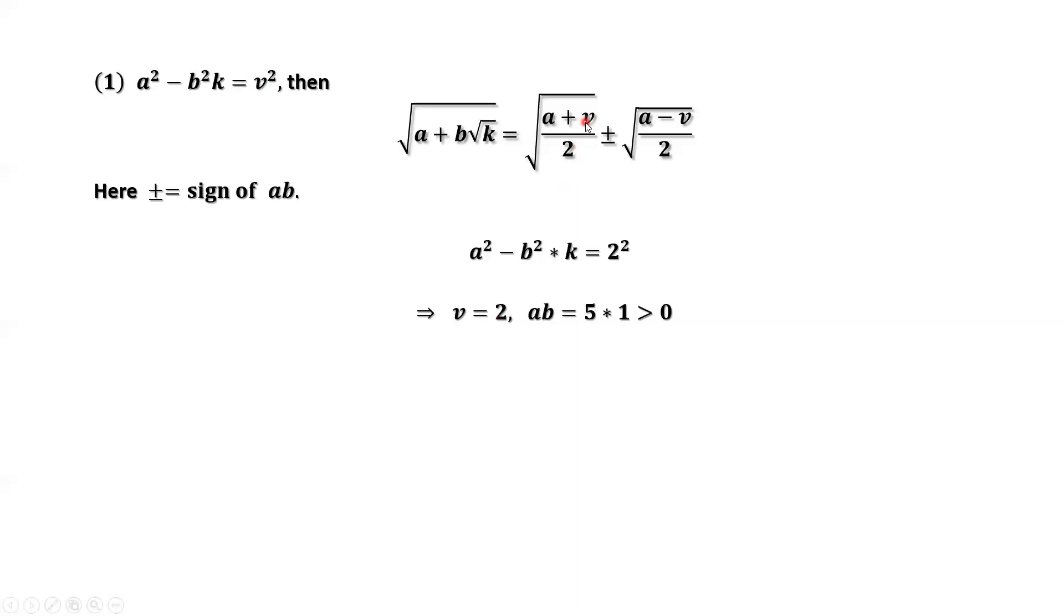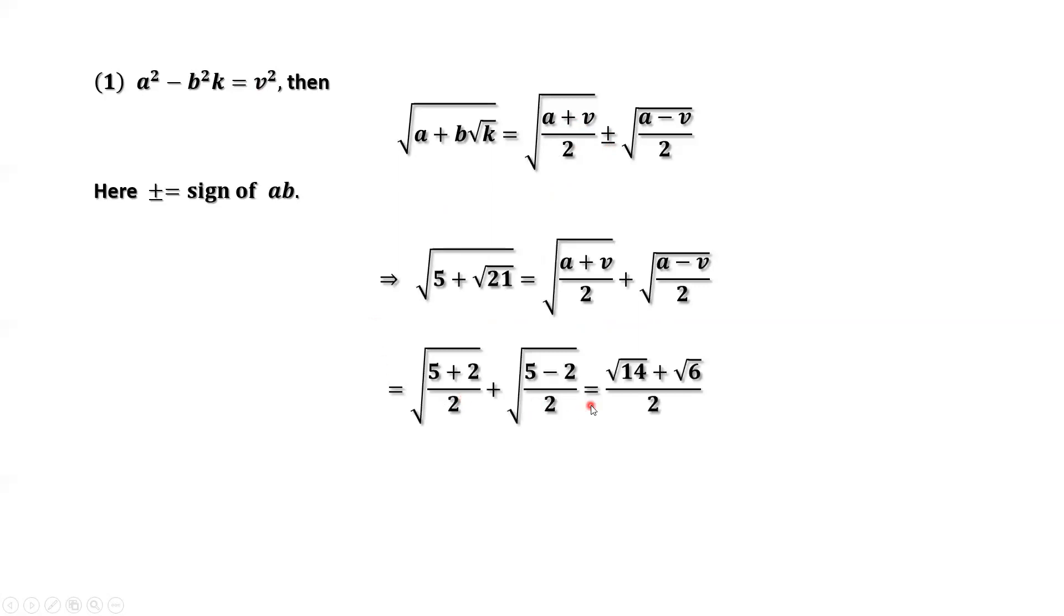v equals 2, we have a here. And the plus minus, which one should we pick? This is positive, we pick the plus. Just replace a by 5, v by 2. Simplify this part, we have the final answer: square root of 14 plus square root of 6, all over 2.